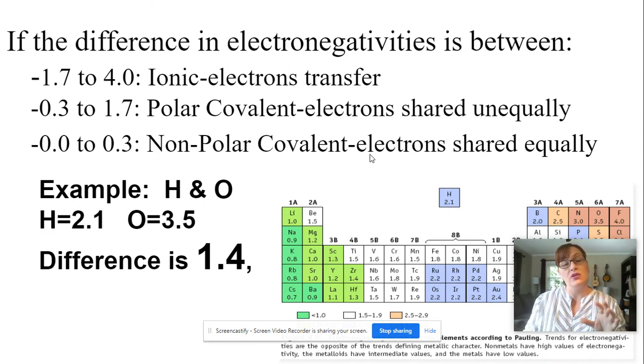If your electronegativity difference falls between 0.3 and 1.7, which is what we have in our example, then you've got a bond that's called polar covalent, which means that the hydrogen and the oxygen do share their valence electrons, a pair of valence electrons, but not equally.